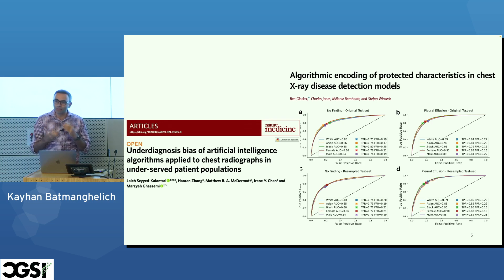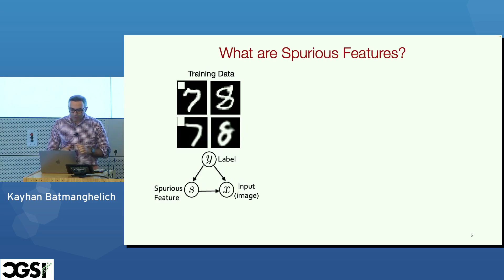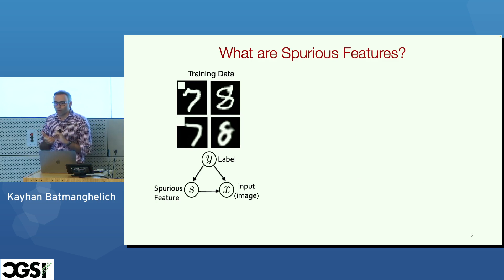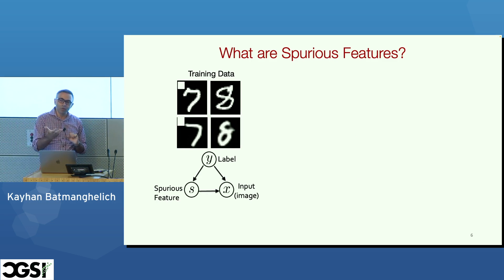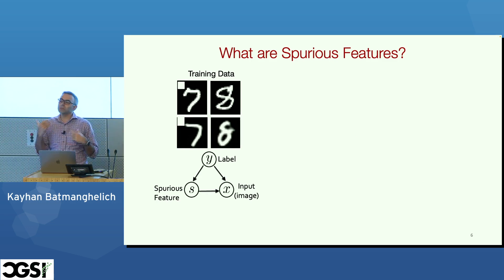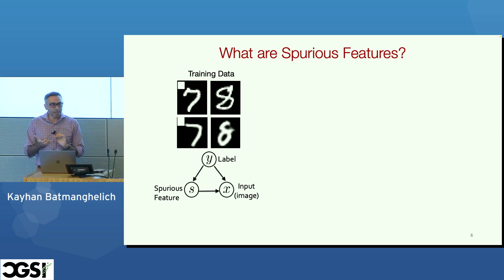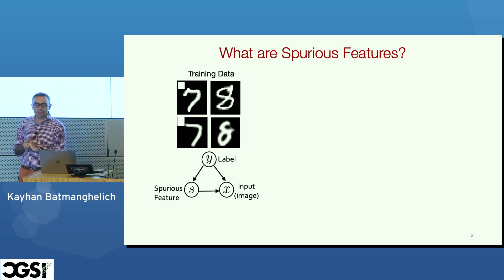This talk is about understanding when this happens. Let me recap and explain how we can define spurious features and what our current understanding is. I'll explain this using a toy example and then extend it to medical imaging data.